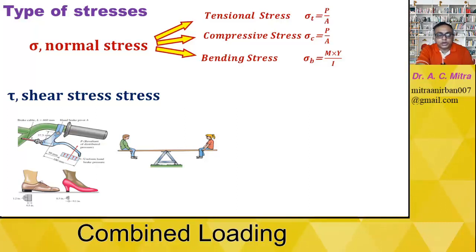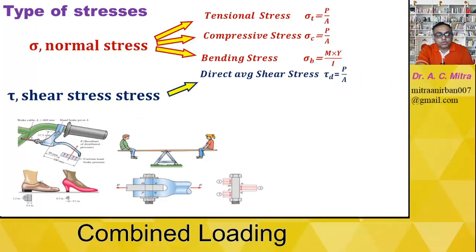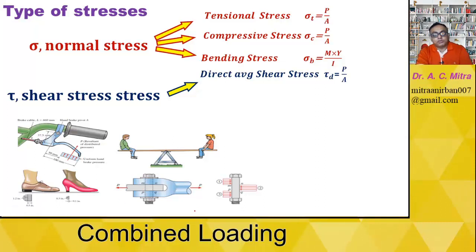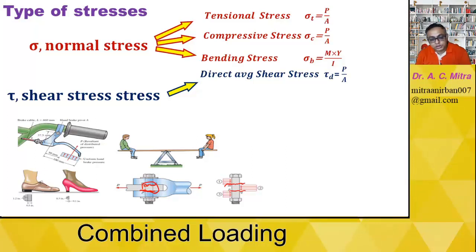Those are the three basic normal stress types. For shear stresses, the first type is called direct average shear stress: τ_d = P / Area. Consider a knuckle joint — if forces are applied at two points, stress is produced at two locations, meaning double shear takes place. The area in question is the cross-sectional area, which is the circular area π/4 · d².